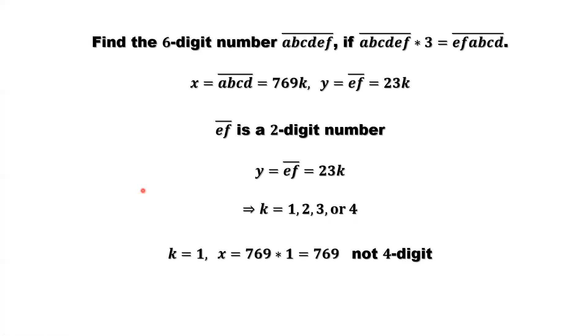We check one by one. If K equals 1, X equals 769 times 1. Here, that's the formula. Equals 769. It is not a 4-digit. So K equals 1, we don't have a solution. X must be a 4-digit number.